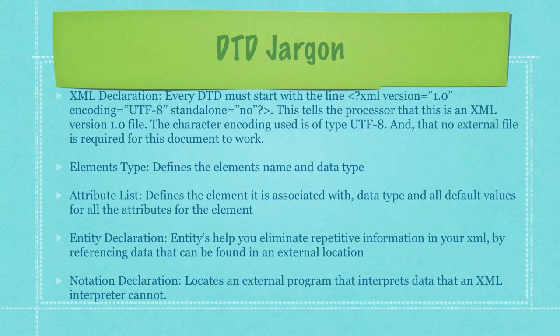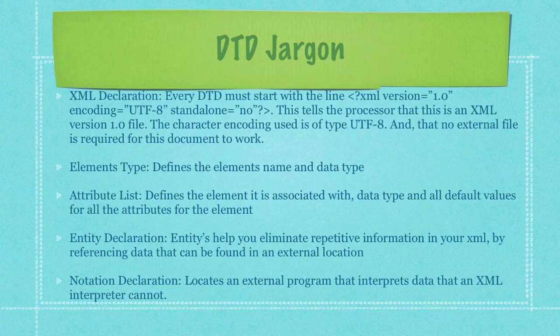Now I'll go through some DTD jargon. First, you have XML declarations — every DTD must start with the line I have right here. This tells the processor that this is an XML version 1.0 file, the character encoding is UTF-8, and that no external file is required for this document to work, which is what the standalone attribute defines. Element types define the element's name and the data type of that element. Then you have attribute lists, which define the element the attribute is associated with, the data type, and all default values for all the attributes of the element. Then you have entity declarations — entities help you eliminate repetitive information in your XML by referencing data that can be found in an external location. Finally, you have notation declarations, which locate an external program that interprets data that an XML interpreter cannot, such as a JPEG file, a video file, or anything that's not basic text.